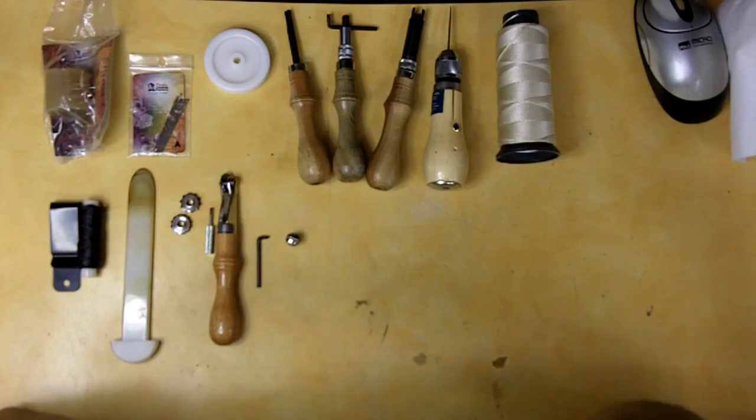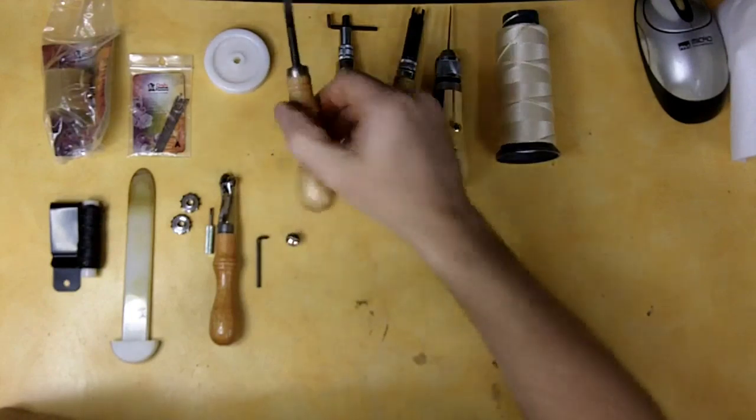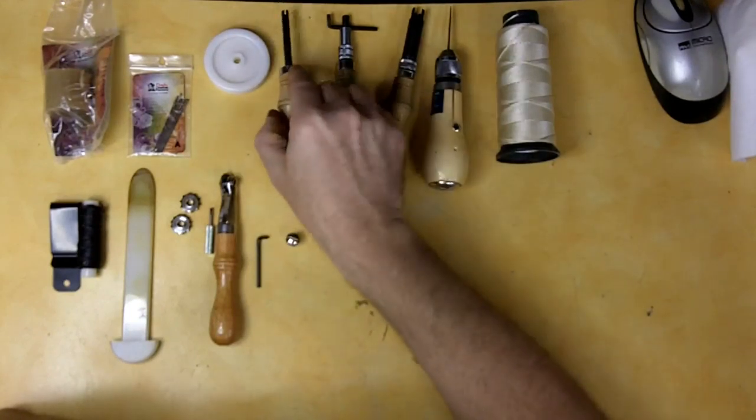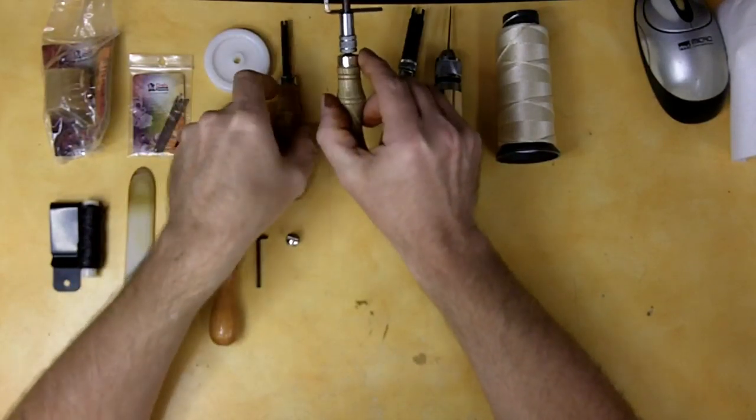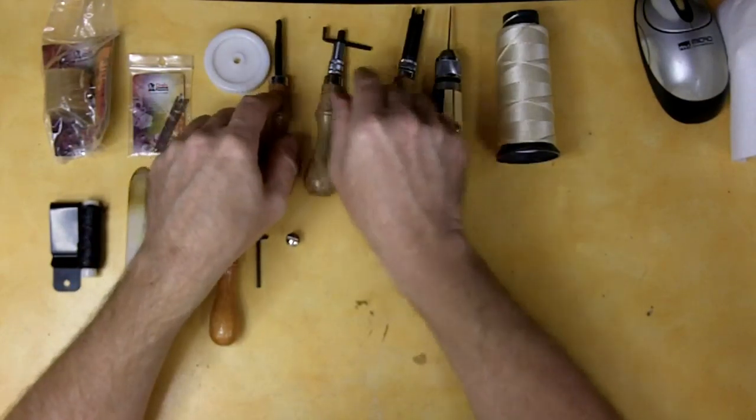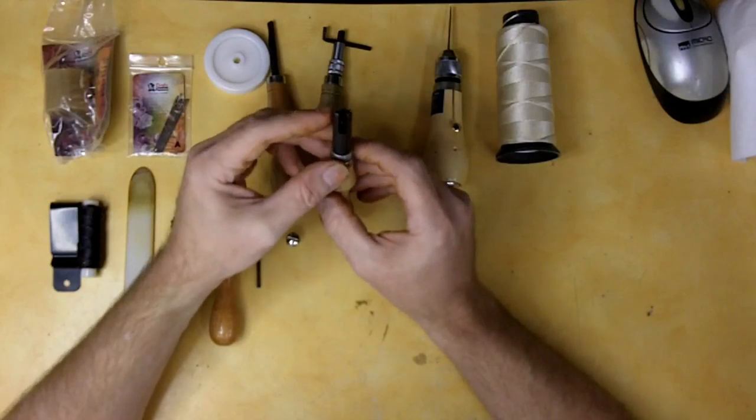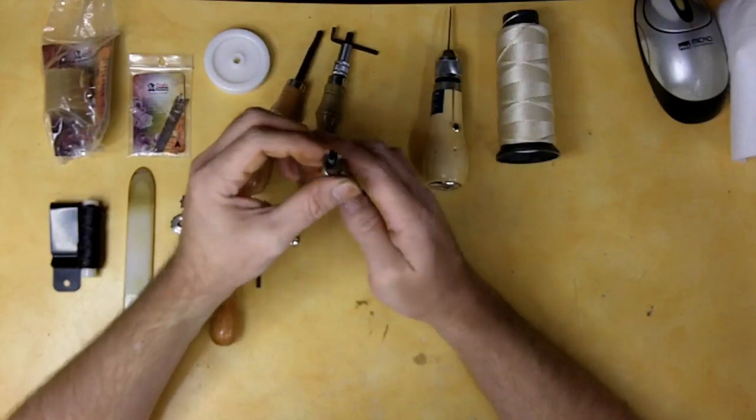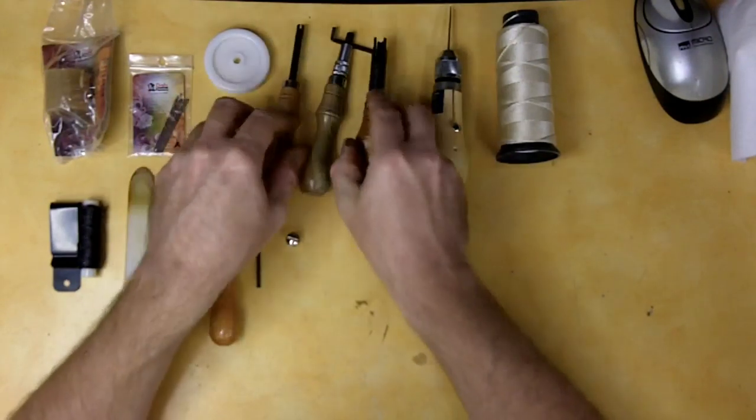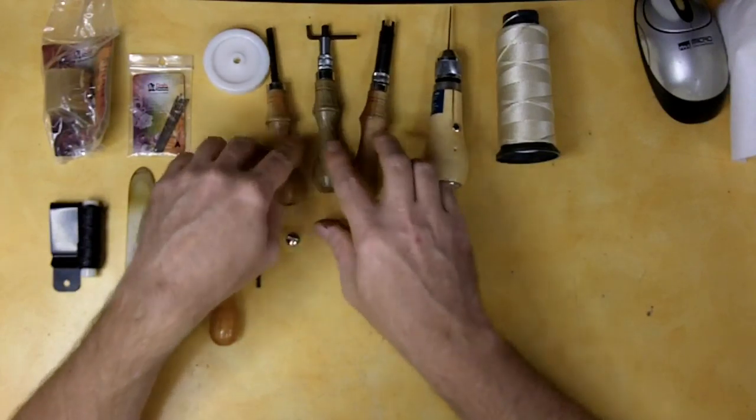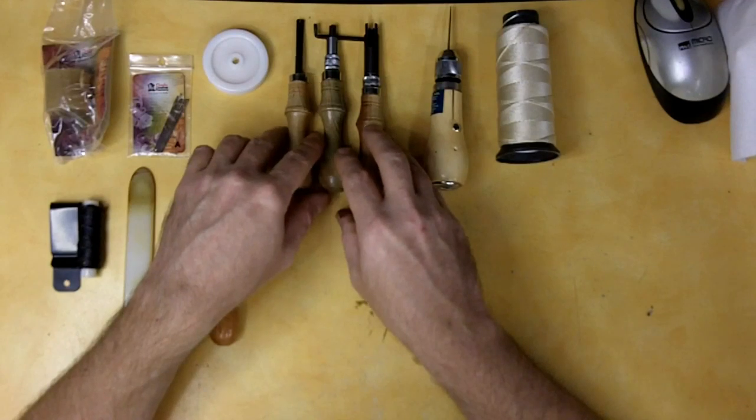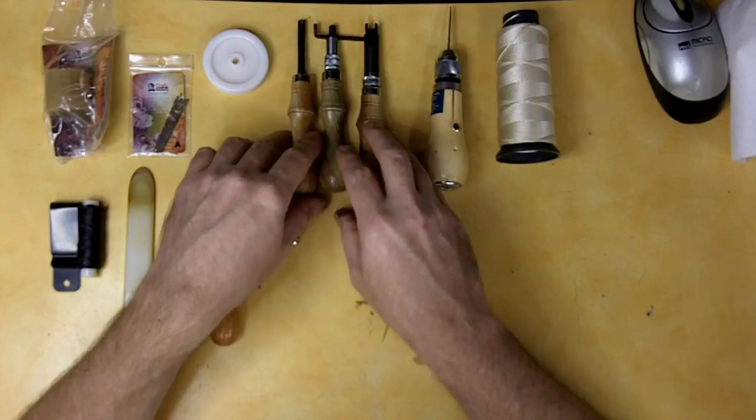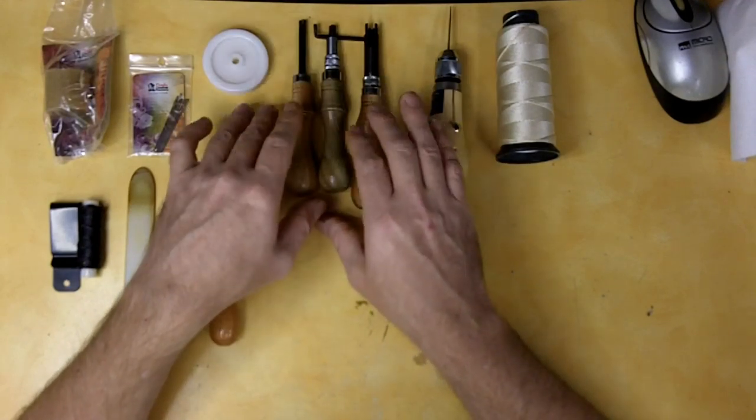These three items here, which is an edge beveler, a grooving tool, and this is supposed to be an adjustable V-Gouge I assume, I picked all three of these up at Harbor Freight for $9.99, knowing full well, based on reviews, that they're not quite good.